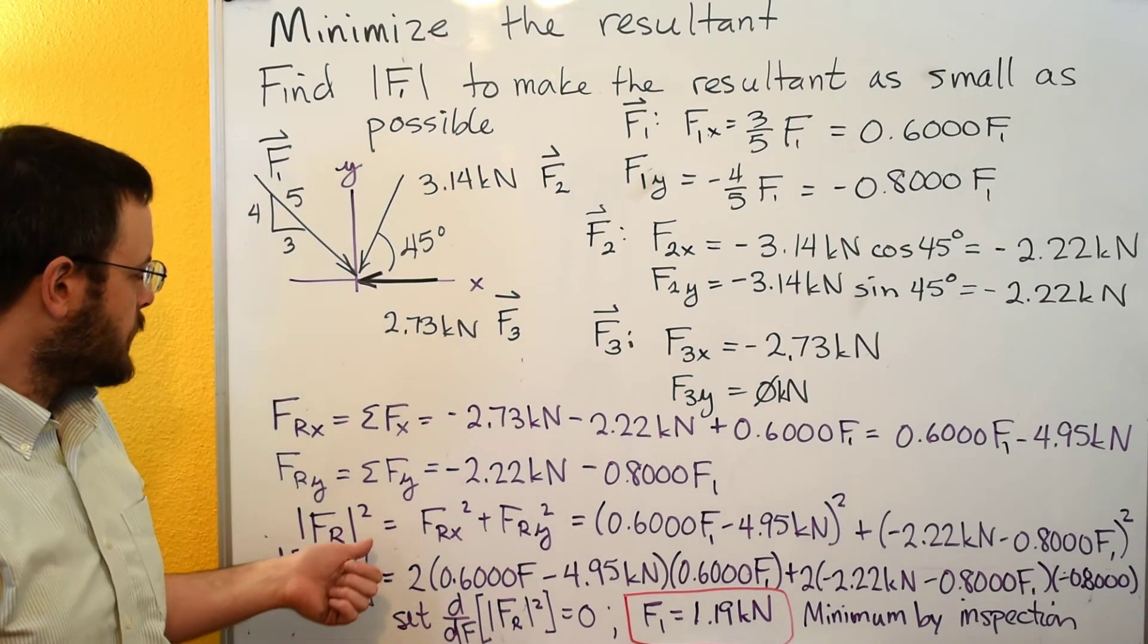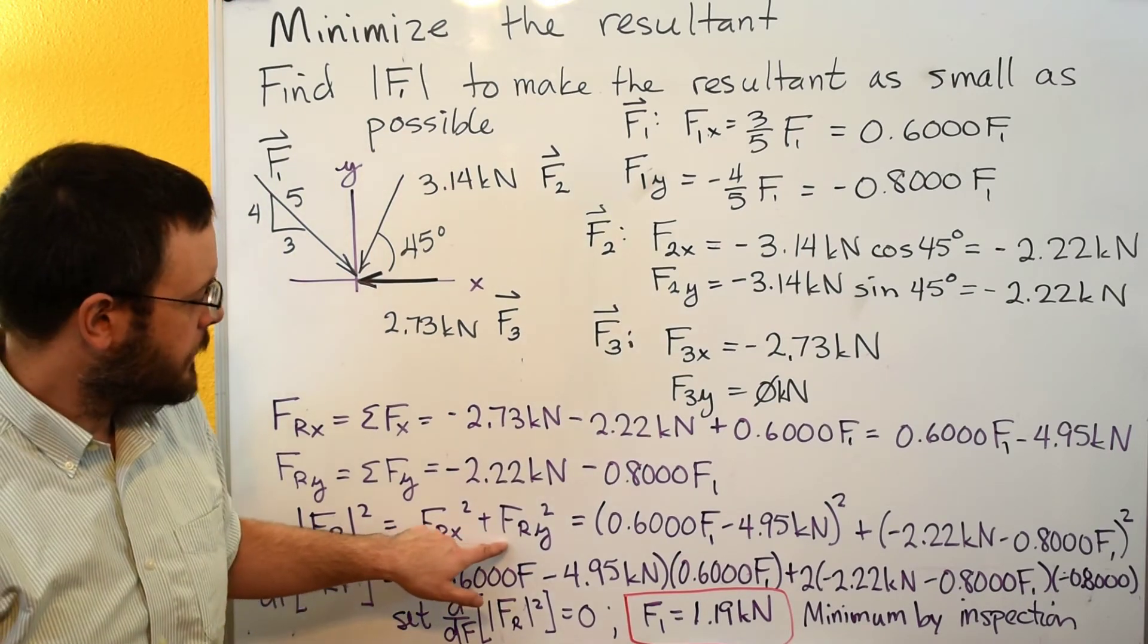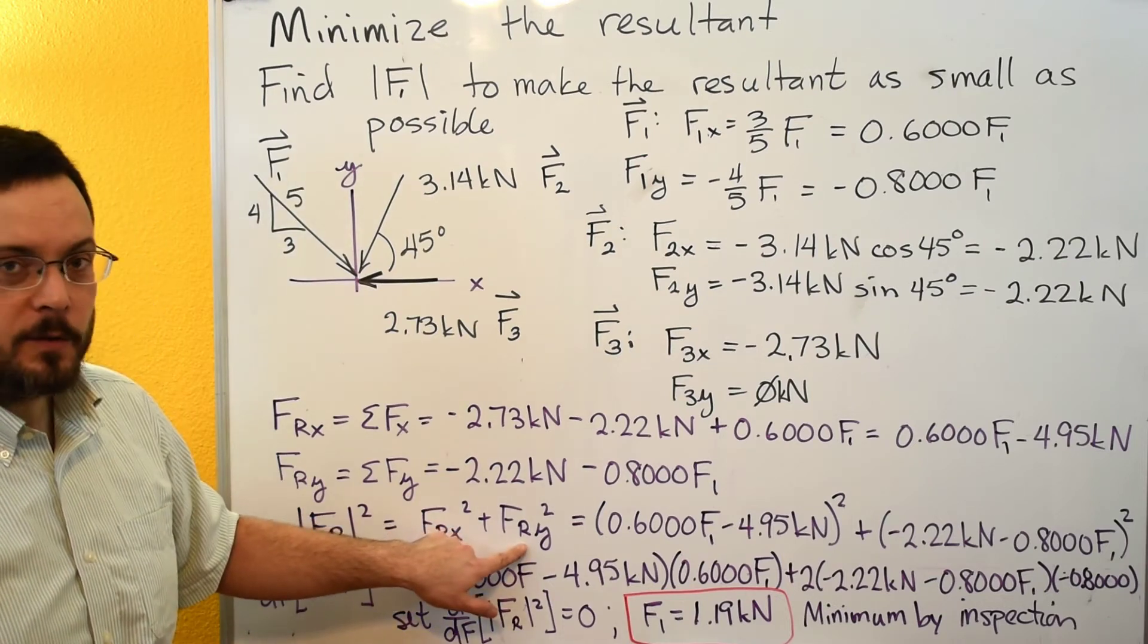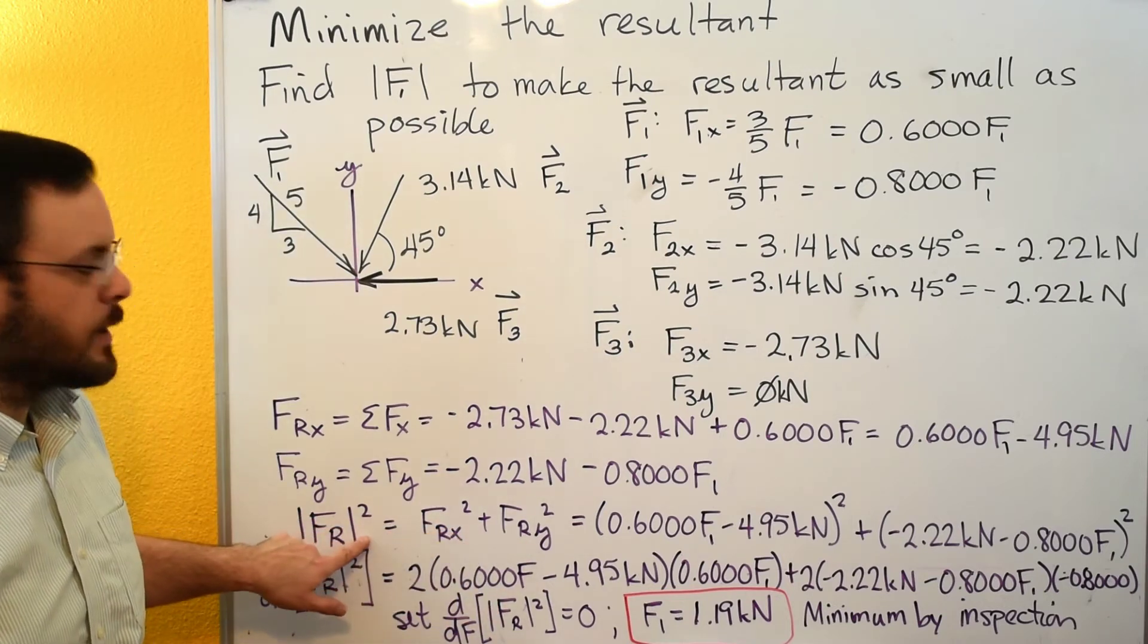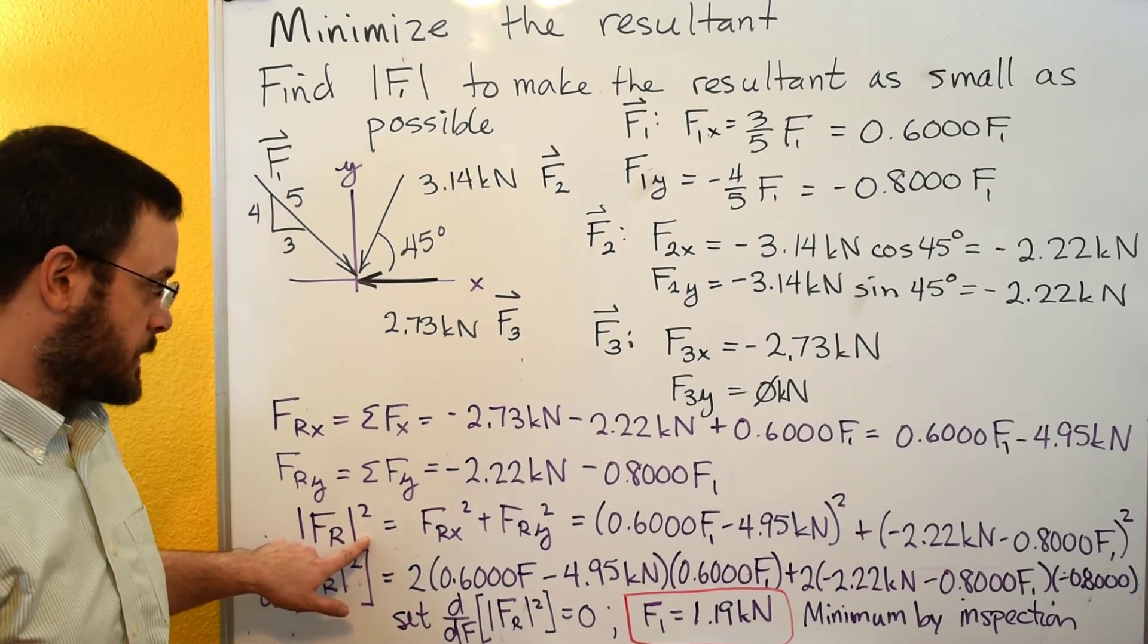So we can find a local min or max by finding the magnitude of the resultant. So that would be FRX squared plus FRY squared. And I'm going to go ahead and square that magnitude just to make it a little easier to work with in the next step.